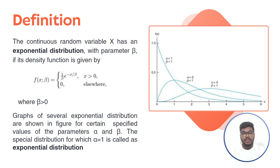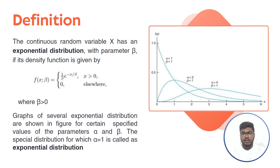For certain specified values of parameters alpha and beta, the special distribution for which alpha equals 1 is called the exponential distribution. Whenever in this distribution the alpha value equals 1, then the distribution is called the exponential distribution.